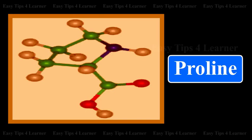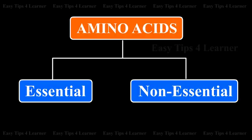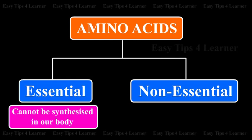The amino acids are classified as essential and non-essential amino acids. Essential amino acids cannot be synthesized in our body; hence they should be made available through food.